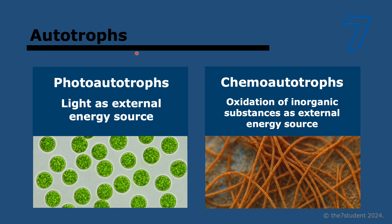Now let's look at the types of organisms in food chains. First, autotrophs make all the carbon compounds required for life themselves from simple inorganic substances. They need an external energy source to do this. We have two types: photo-autotrophs, which do photosynthesis and use light as their energy source — plants, algae, some bacteria — and chemo-autotrophs, such as bacteria that can oxidize iron to get the energy to make carbon compounds. The key take-home message: autotrophs make all their carbon compounds themselves.